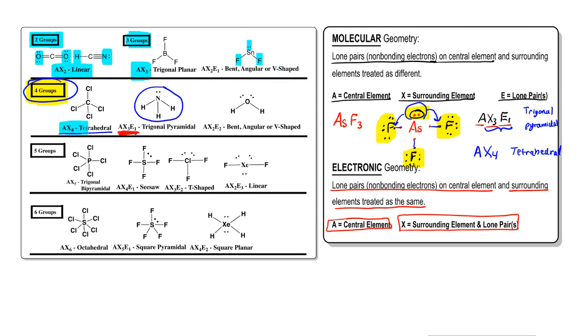Four groups fall into three categories. Five groups fall into four categories, and then six groups fall into three categories. It's important to remember how many groups are around the central element. How many surrounding elements and lone pairs are on that central element determines which group you fall into.